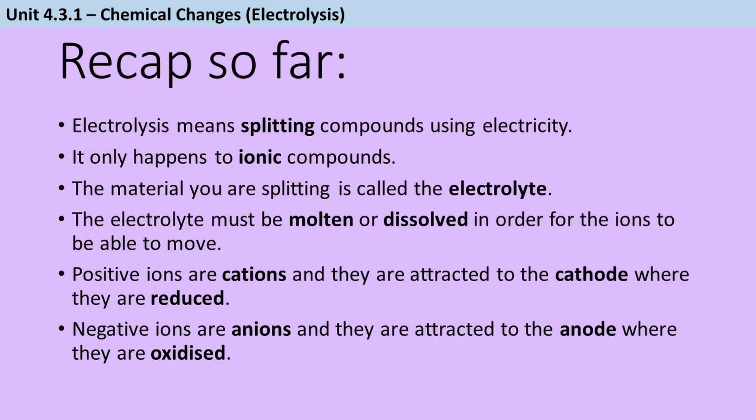So just to recap, so far we have electrolysis means splitting compounds apart back into the elements they're made of using electricity. It only happens to ionic compounds, not covalent ones. The material you're splitting is called the electrolyte and that electrolyte needs to be either molten, so a liquid, or dissolved in order for the ions to be able to move. Positive ions are called cations and they are attracted to the cathode where they are reduced. And negative ions are anions and they are attracted to the anode where they are oxidised.